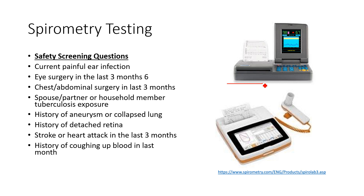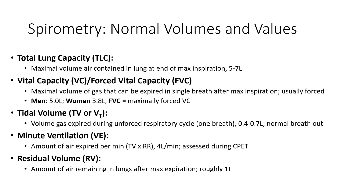We can get pretty good data from basic spirometry. We don't necessarily need plethysmography unless we want measurements of residual volume, FRC, and true total lung capacity. The values we get from a spirometry test include: total lung capacity — typically only obtained from plethysmography — vital capacity, tidal volume. We can also get minute ventilation if we measure quiet breathing. Residual volume is what you get from plethysmography.